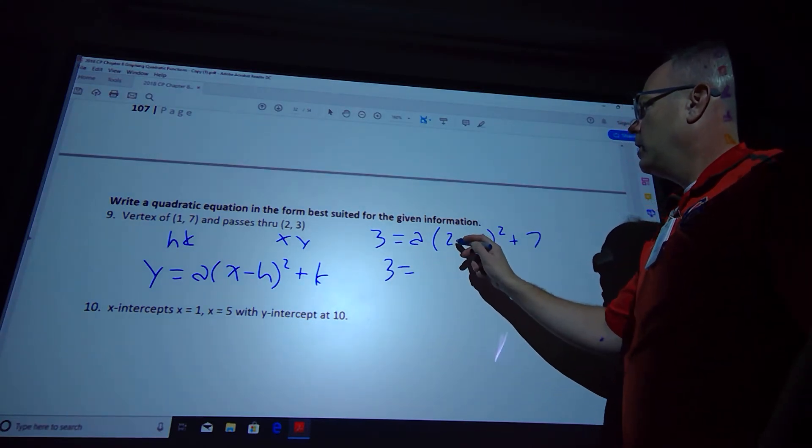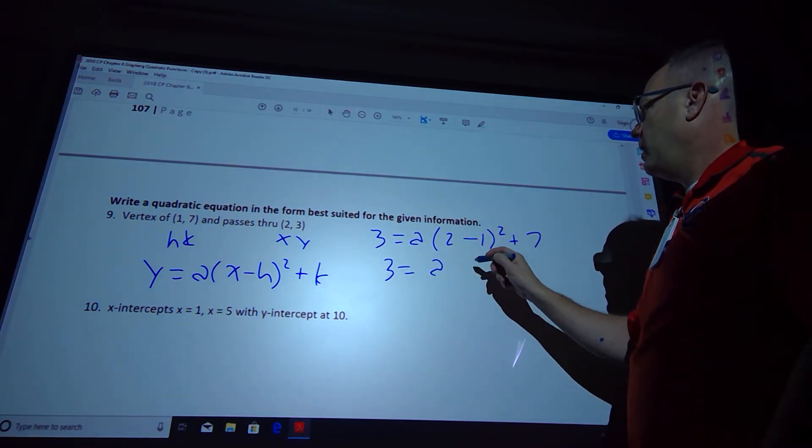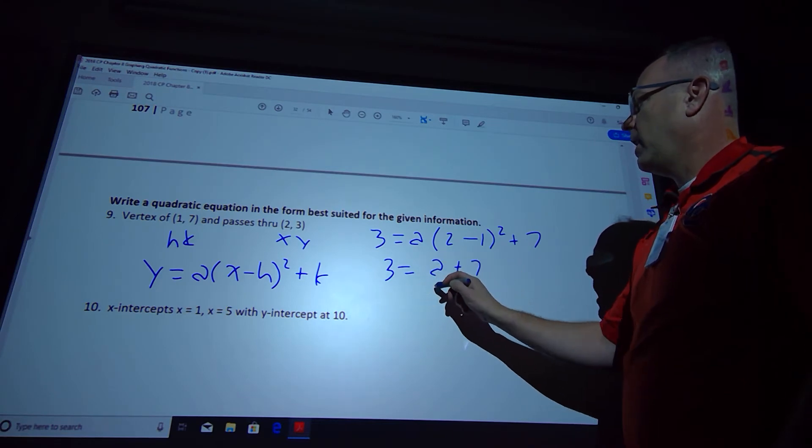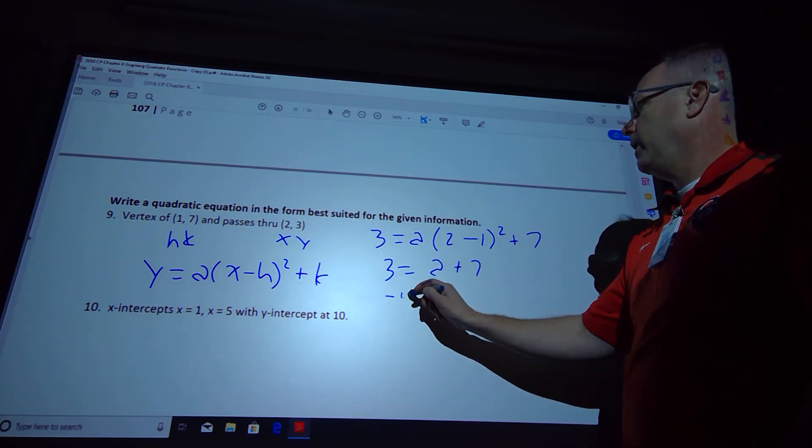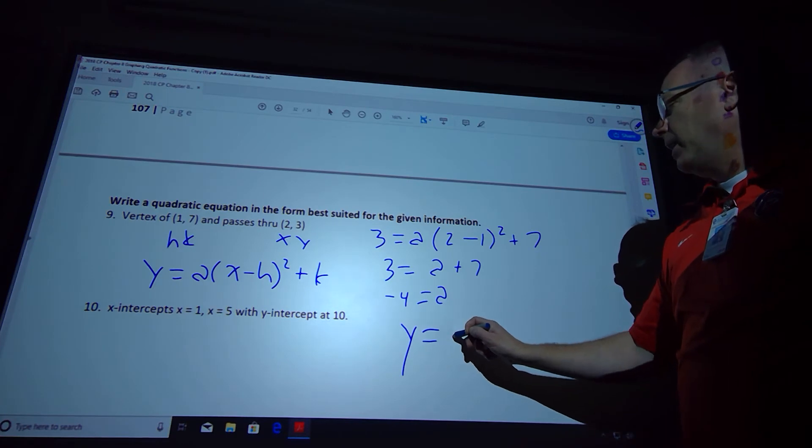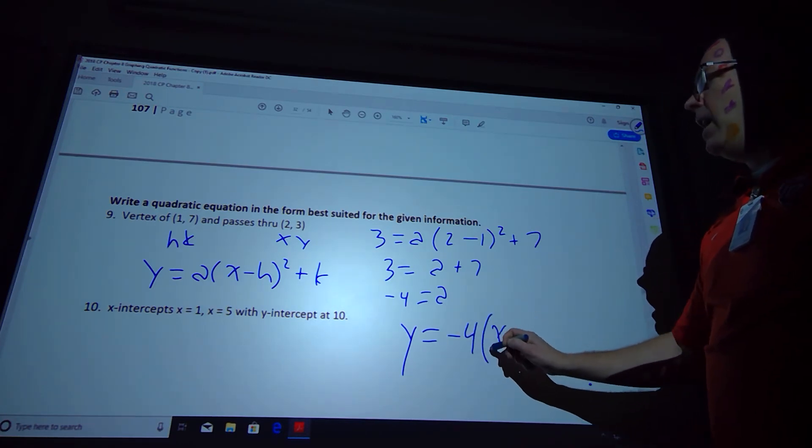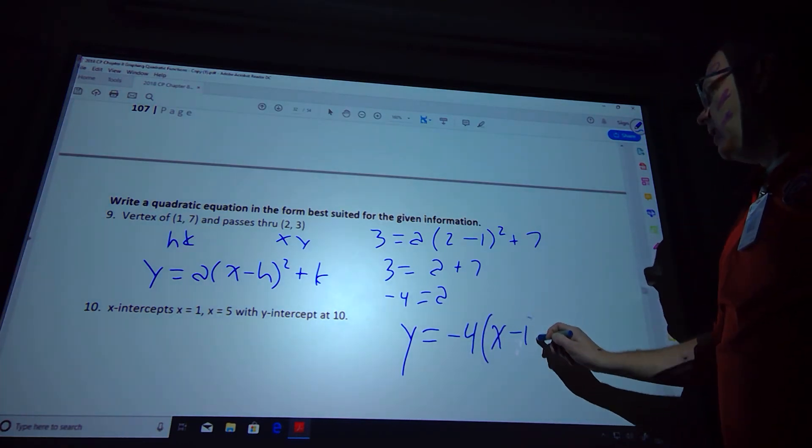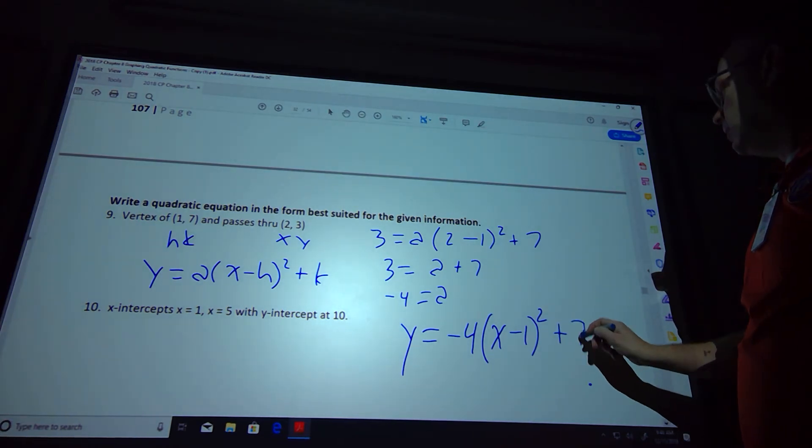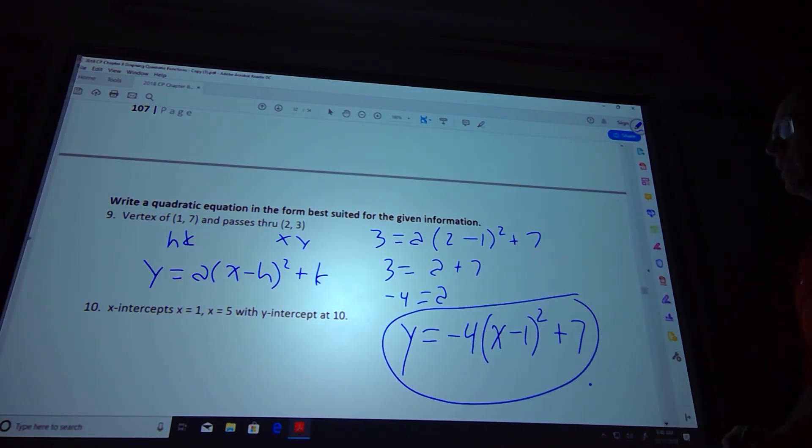So I get 3 = – that's 1 squared, so that's just a, and then plus 7. Subtract the 7, so I find that a is equal to negative 4. Now we're ready to plug in. I'm going to plug just my a value and my h and my k value, and that's all done. That's number 9.